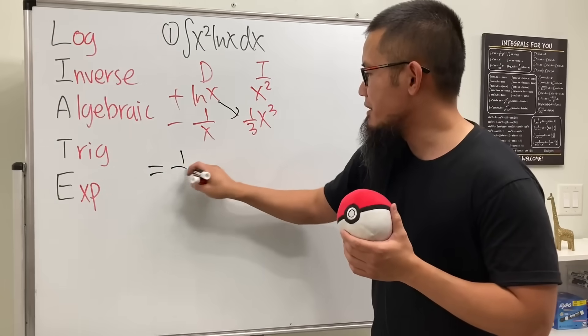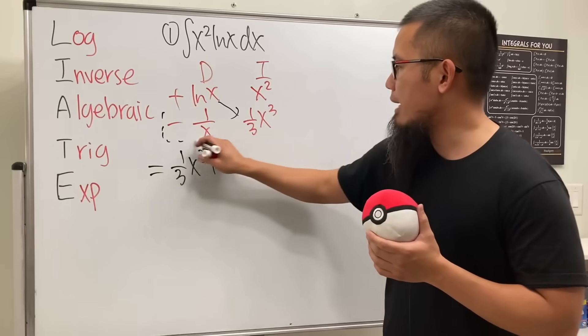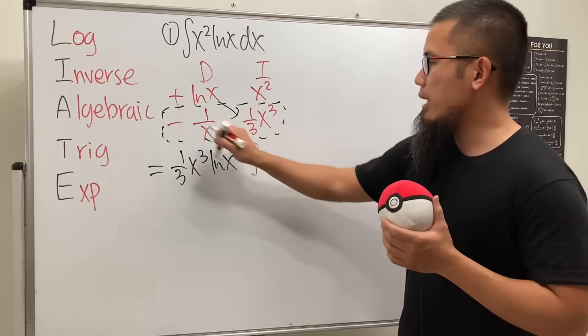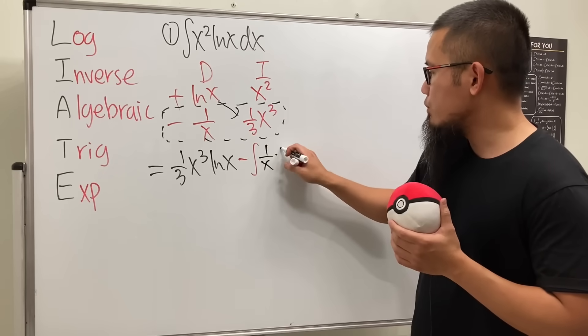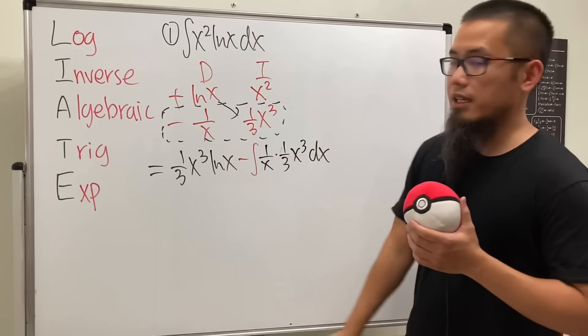So we get 1 third x to the third power times ln x. And then we are going to multiply by these two things together and put that inside of an integral and subtract that. Here we have 1 over x times 1 over 3. And then we have the x to the third power. And let's put down the x.